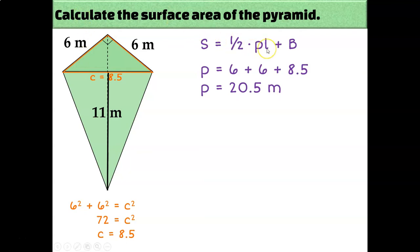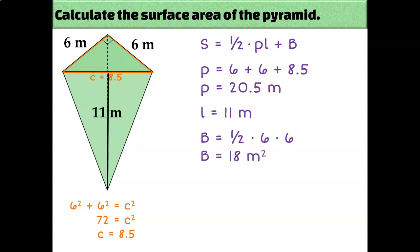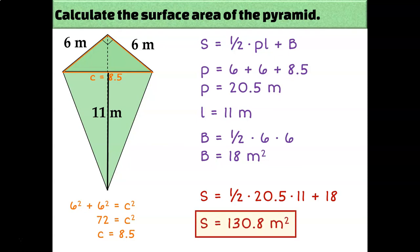Now let's talk about L, the slant height — the distance from the apex along the lateral face down to the base — which is labeled as 11 meters on our diagram. B is the area of the base: since it's a right triangle with legs of 6, the area is one half times 6 times 6, which is 18 square meters. Now that I know P, L, and B, I can plug those numbers into my formula and get an answer of 130.8 square meters.